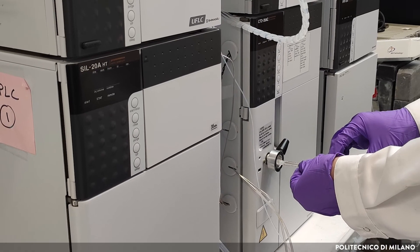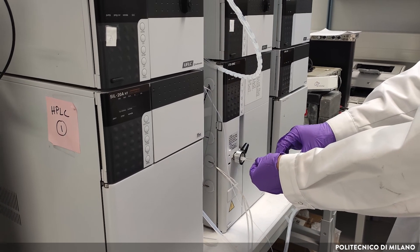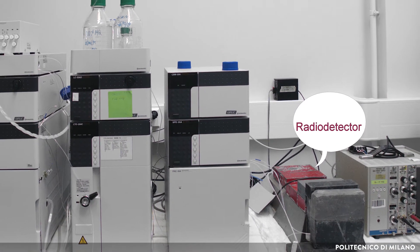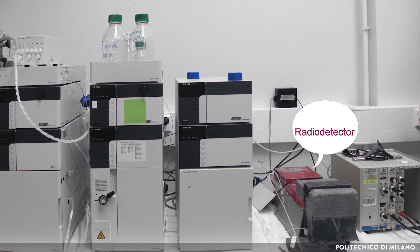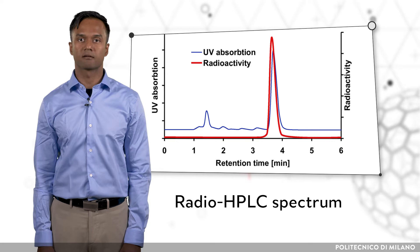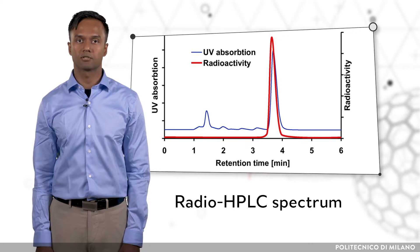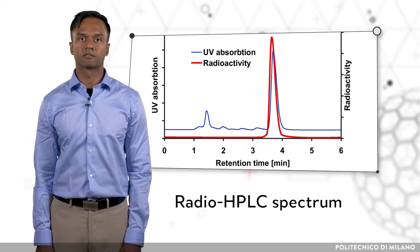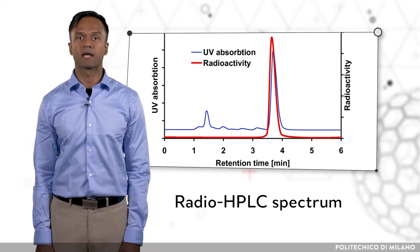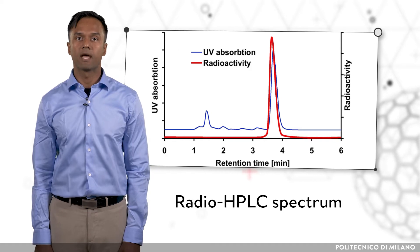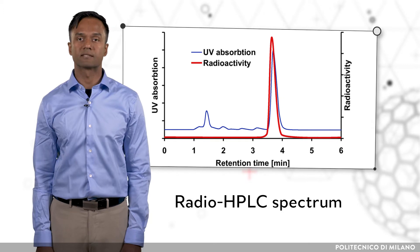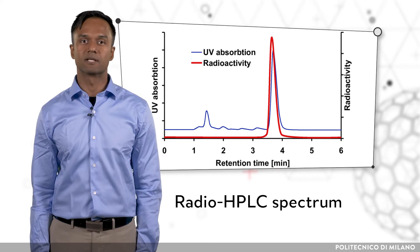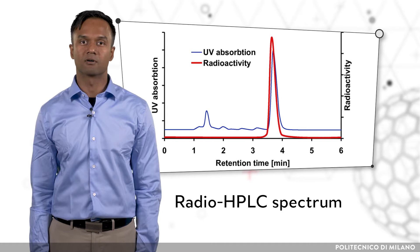RadioHPLC exploits liquid chromatography to separate the different components present in the radiopharmaceutical, and a radiation detector attached downstream works in real-time to identify these components. In an illustrative RadioHPLC chromatogram, the blue line shows the number of organic compounds in the mixture, whereas the red line is obtained from the radiation detector. There is one major radioactive component shown by the single red-lined peak, and one major organic component shown by the single blue-lined peak. Since both peaks coincide, it is possible to assess the incorporation of the radioactive species into the organic molecule.